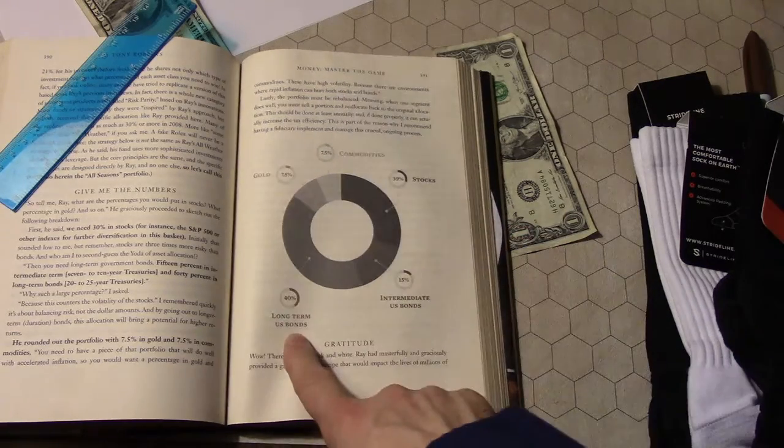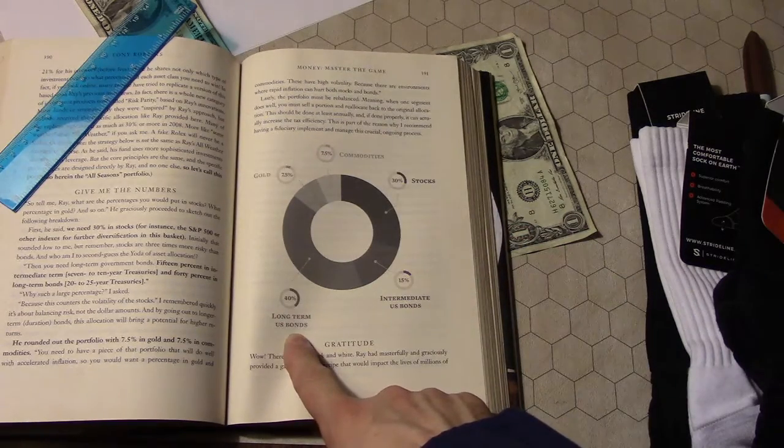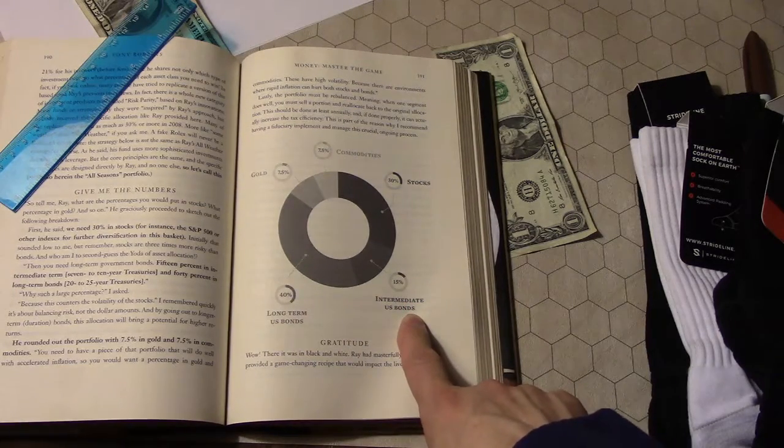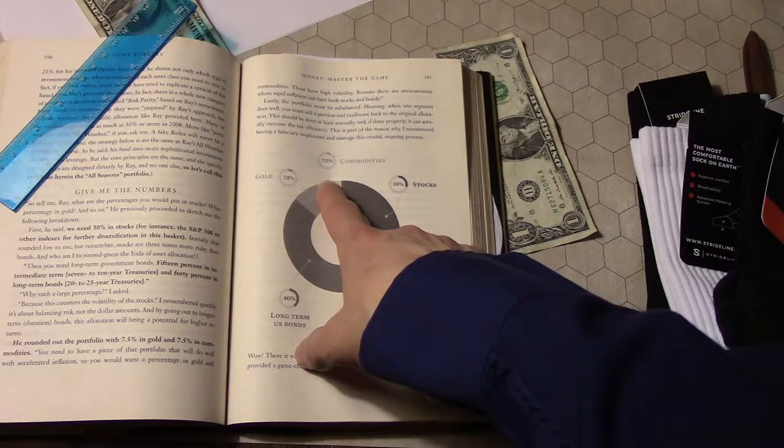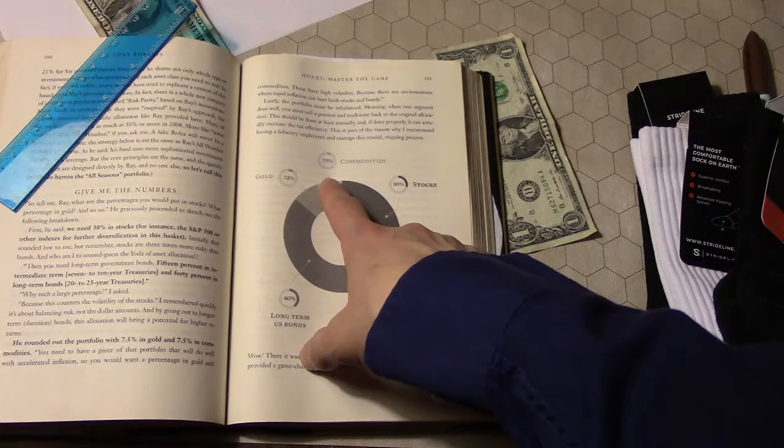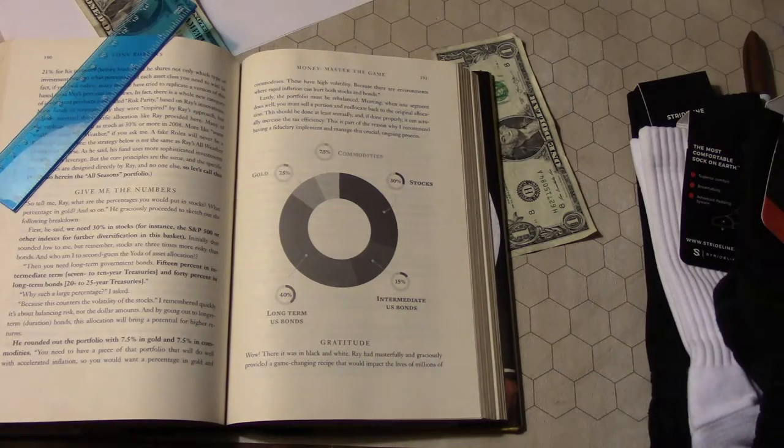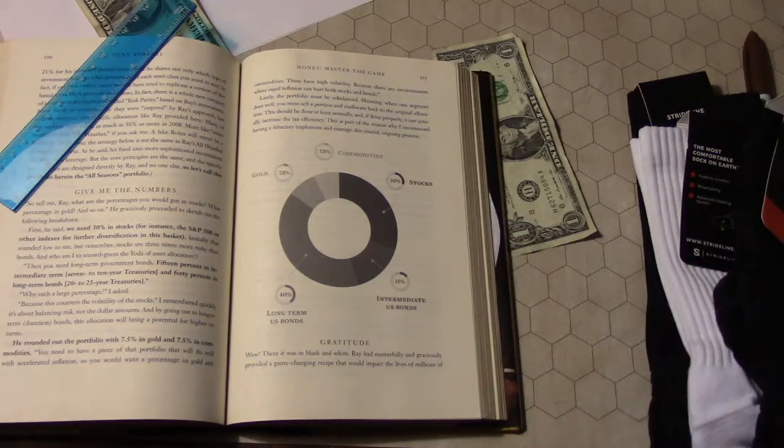So stocks 30%, long-term U.S. bonds 40%, intermediate-term U.S. bonds 15%, commodities 7.5%, and gold 7.5%. That's the punchline of the book. I just saved you a lot of time.